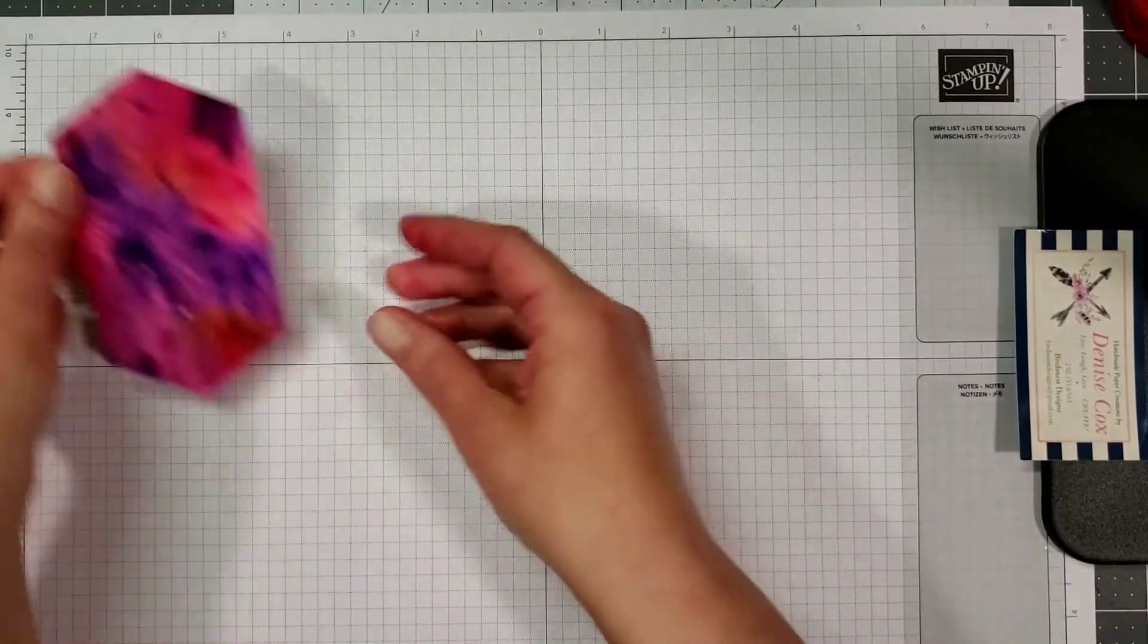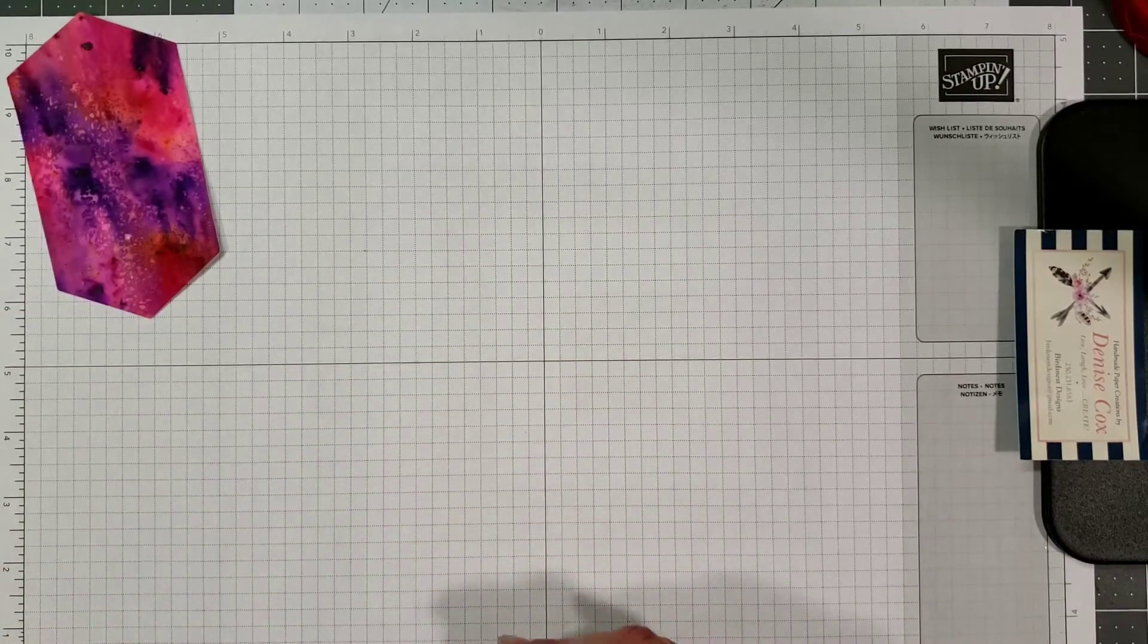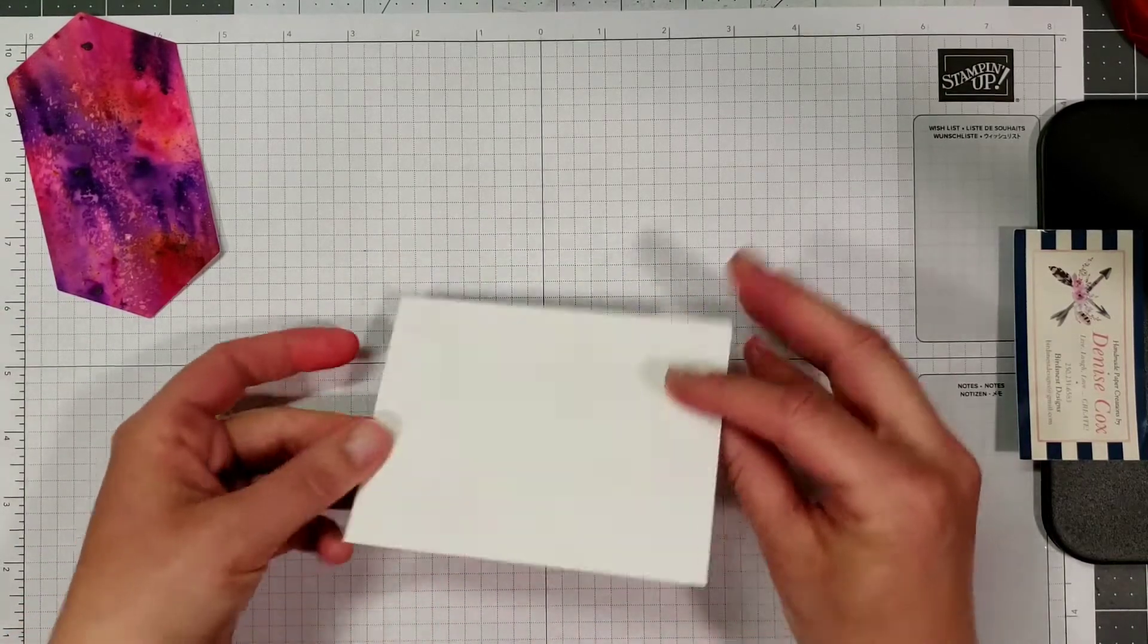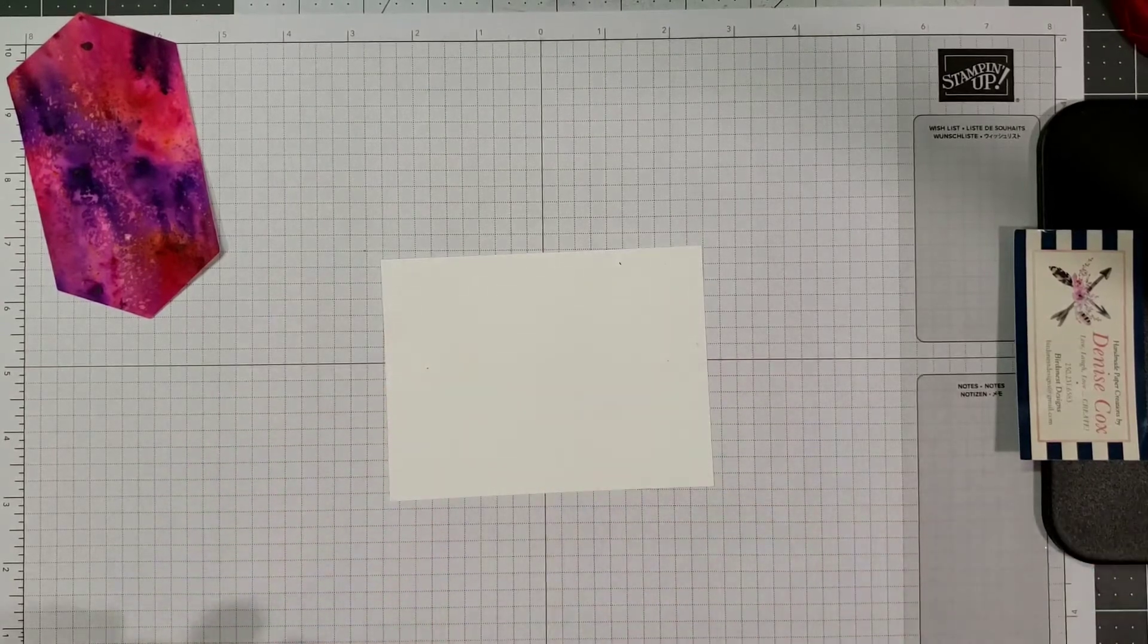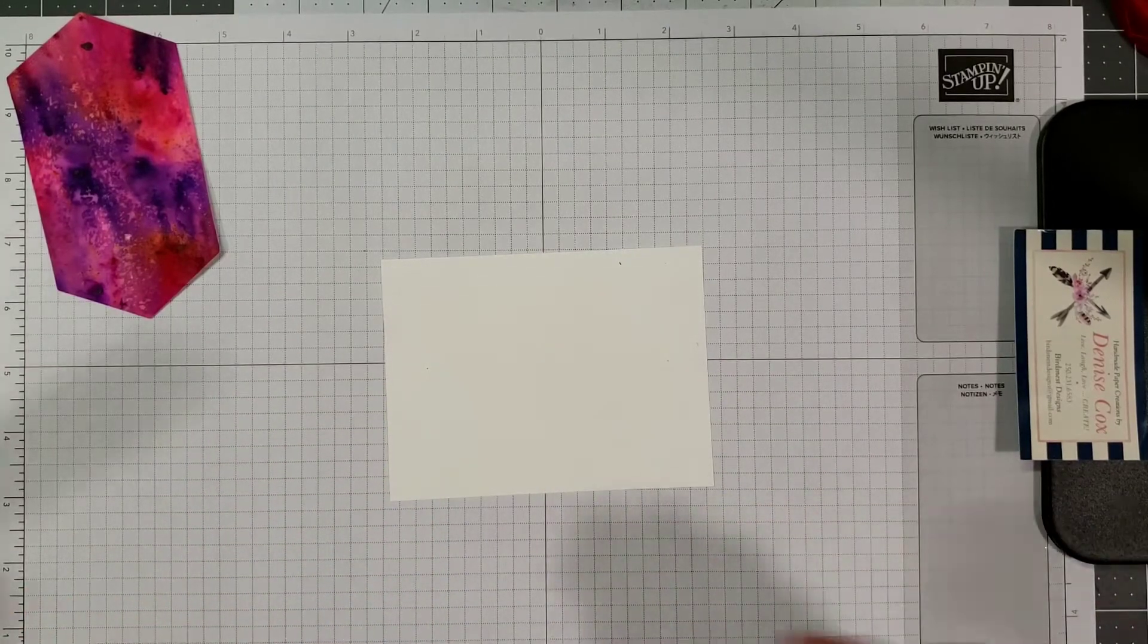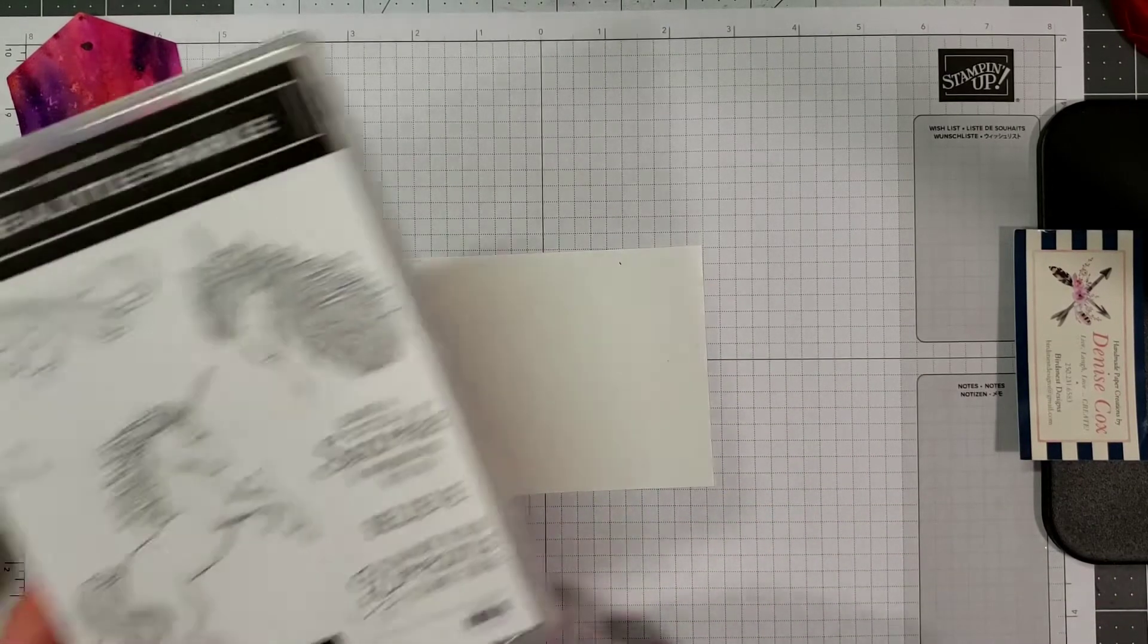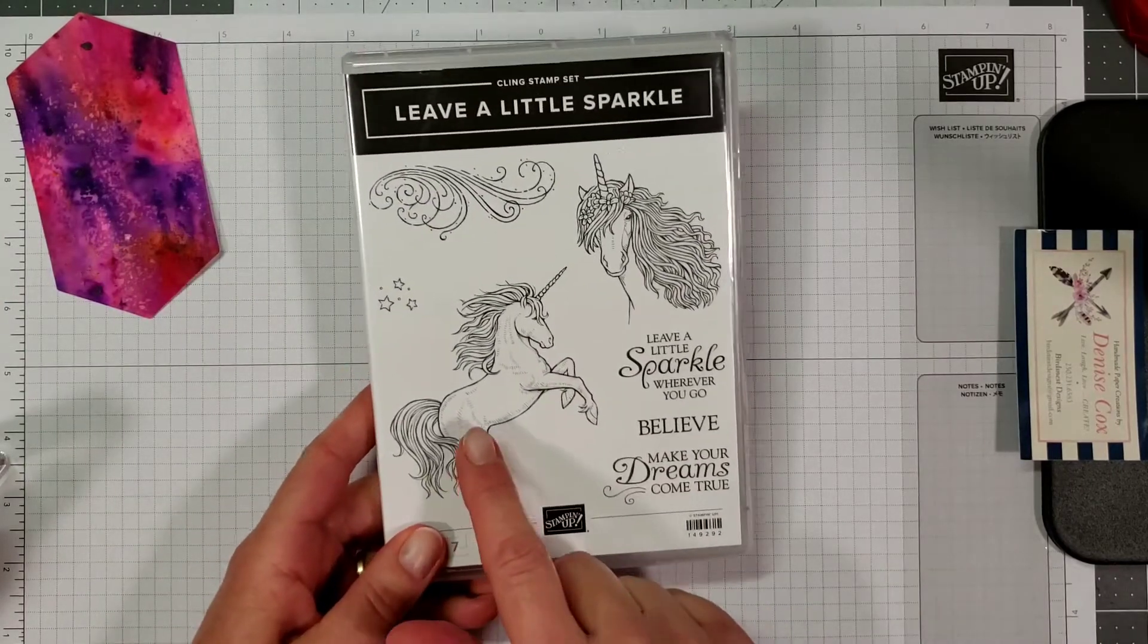The next piece we're going to do is the unicorn. So I've just got a scrap piece of whisper white paper here. I'm going to take the unicorn stamp off of the leave a little sparkle stamp set.